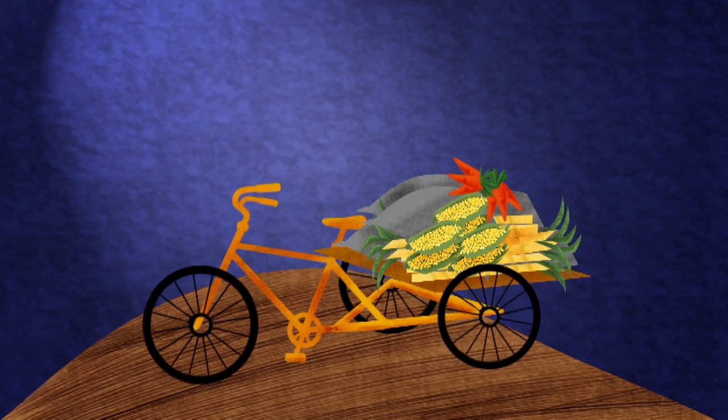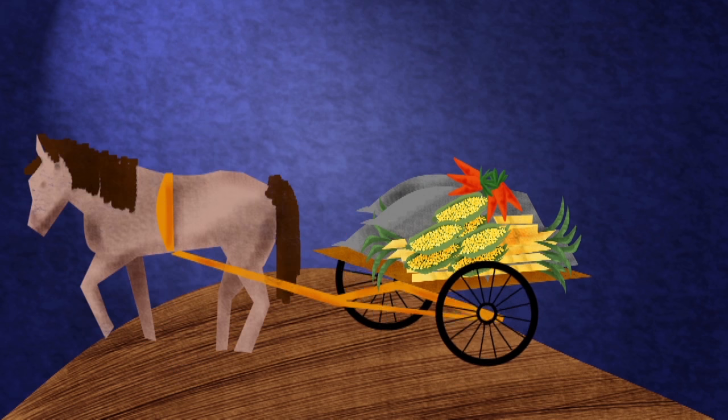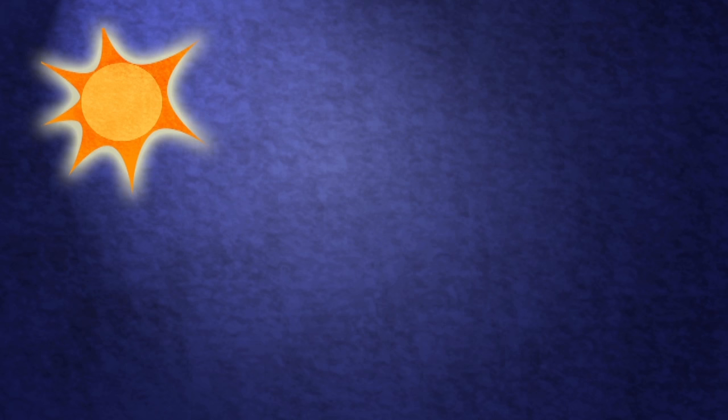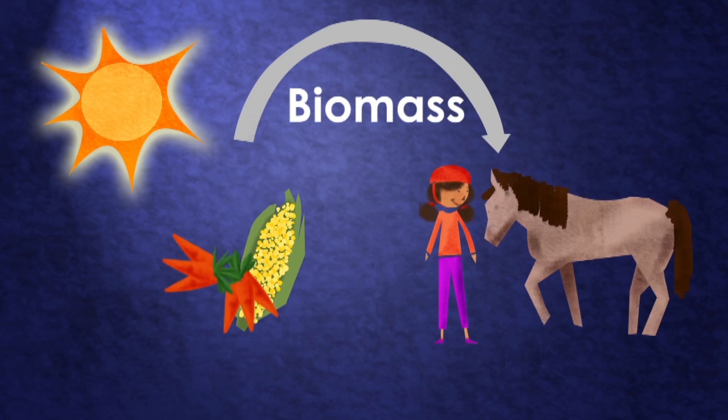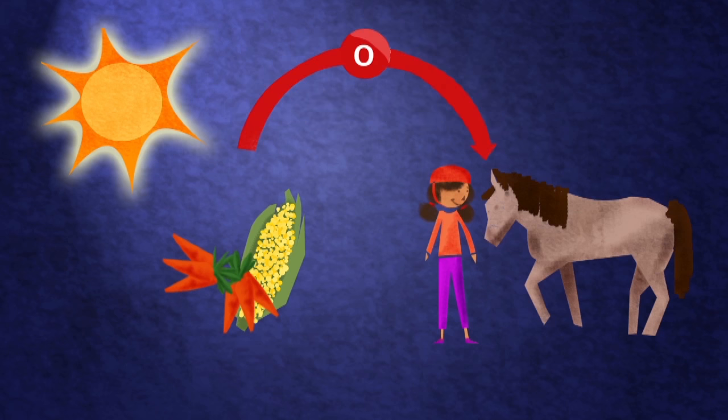Before the invention of engines and electricity, we transported ourselves around on land using muscle power of humans, horses, and bullocks—a solar energy source derived from photosynthesis, which gives us biomass, the horses or our food, and oxygen.